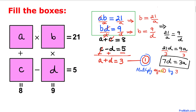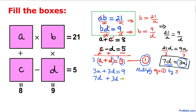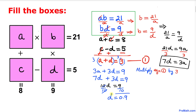Let's multiply equation one by 3 on both sides: 3A plus 3D equals 9. We know that 3A equals 7D, so let's replace 3A with 7D: 7D plus 3D equals 9, giving 10D equals 9. Dividing both sides by 10, D equals 9 over 10, which is 0.9.